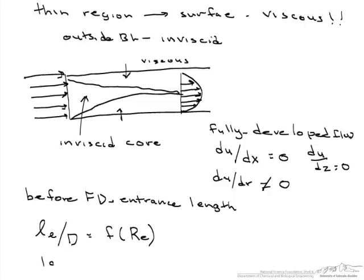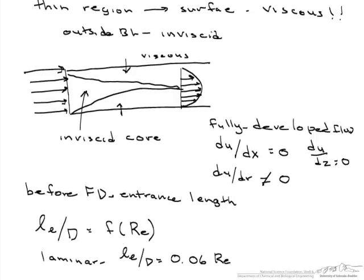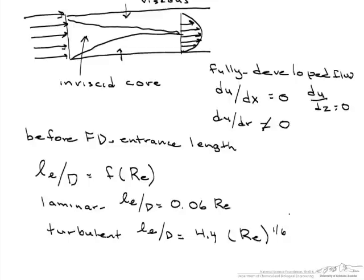If the flow is laminar, this Le/D equals 0.06 times the Reynolds number. However, if the flow is turbulent, this entry length divided by D equals 4.4 Reynolds to the 1/6.